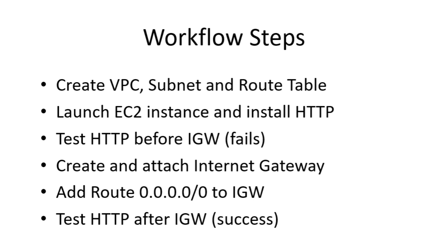To really understand how the Internet Gateway works, let's go through a step-by-step workflow. Step one: we'll create a VPC, a subnet, and a route table as the foundation of our network. Step two: we'll launch an EC2 instance inside that subnet, install a simple HTTP web server, and make sure it's running. Step three: we'll test the HTTP connection before attaching an Internet Gateway — even though the instance has a public IP, the page will fail to load.